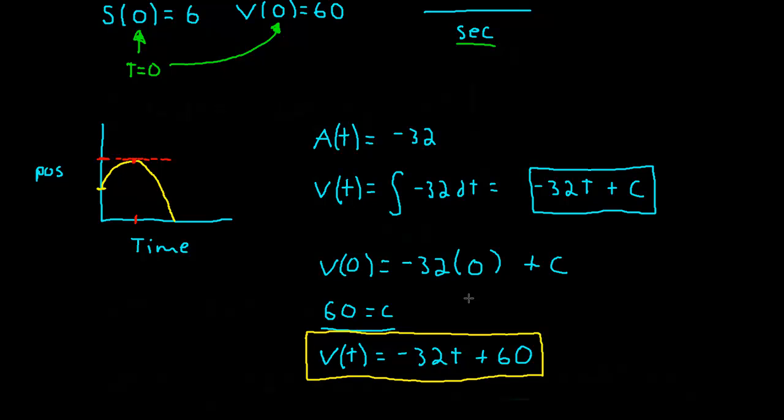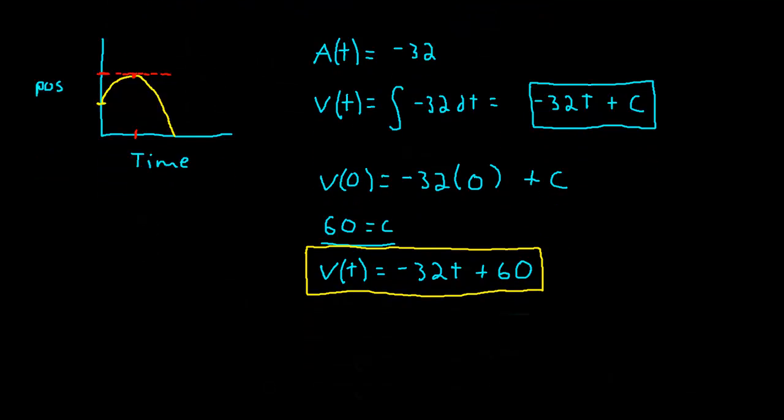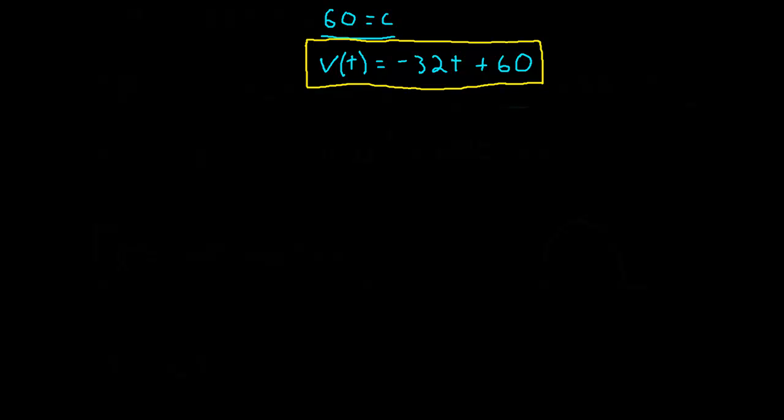Okay, now what we set up here in the beginning was that we wanted to know when the velocity is 0. The velocity is going to be 0 right up here. So, let's just go ahead and figure out when that actually happens. We will take our velocity function, and we'll set it equal to 0. We get negative 32t plus 60 equals 0.